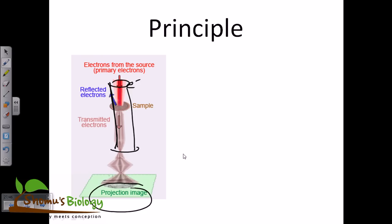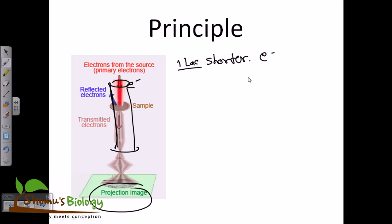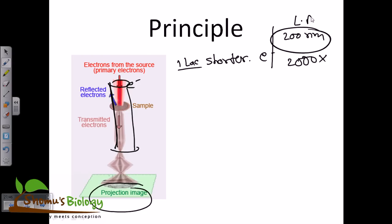The wavelength of electrons is about 1 lakh times shorter than the wavelength of light, which is why electron microscopy gives us much greater resolving power. Light microscopy provides a resolution of around 200 nanometers with about 2000x magnification, but transmission electron microscopy can achieve a resolution of 0.2 nanometers — which is tremendously better.